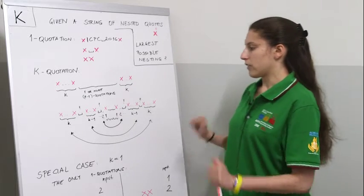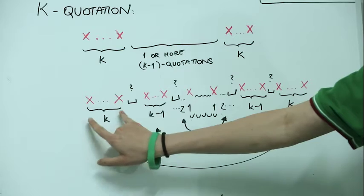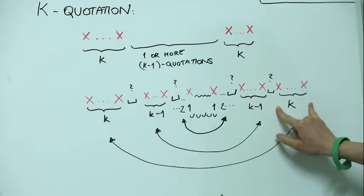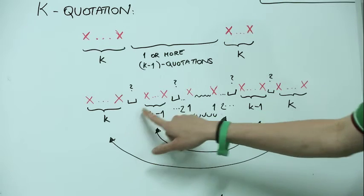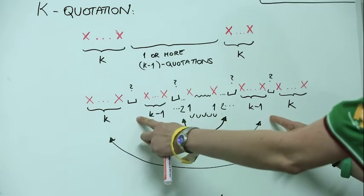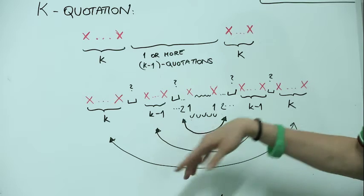If our given string is a k-quotation, it has to start with k quotes and it has to end with k quotes. Then here we might have a space or there might not be a space, and then what is in between has to be at least one k-1 quotation.